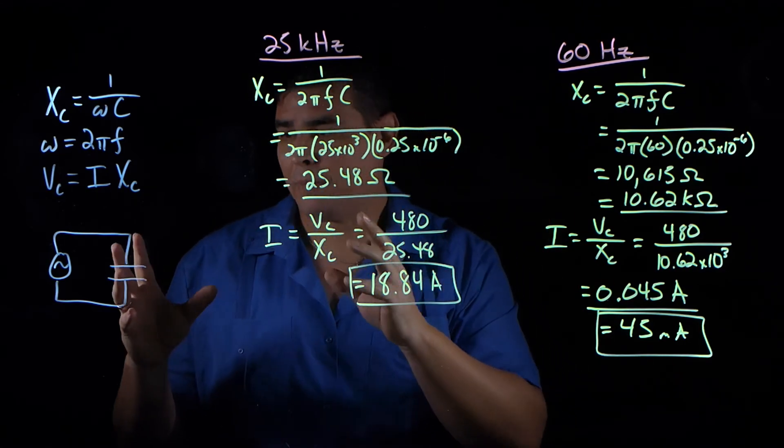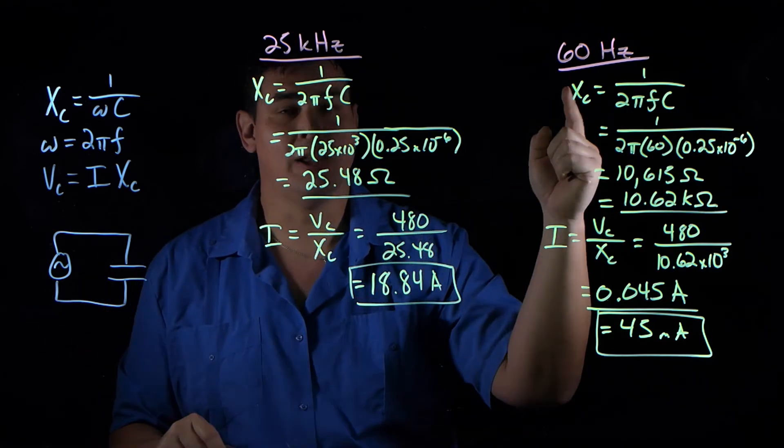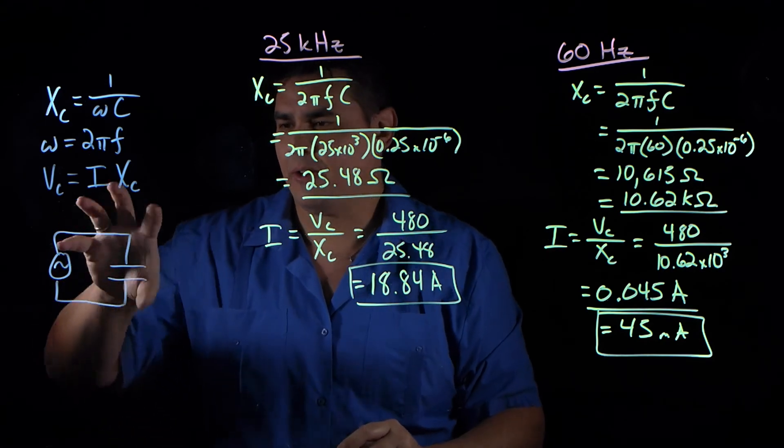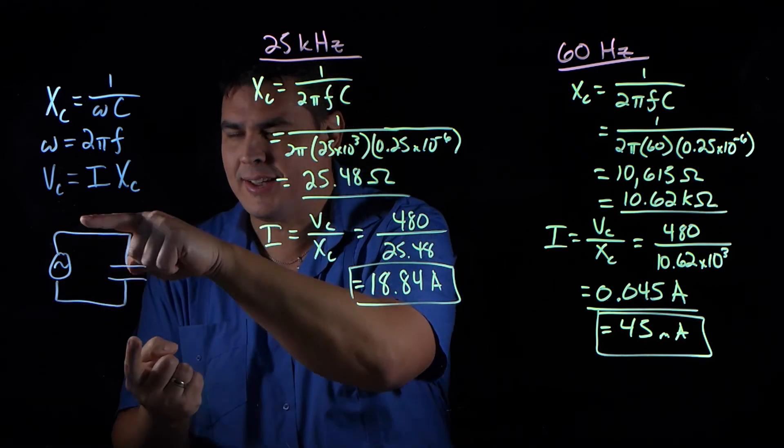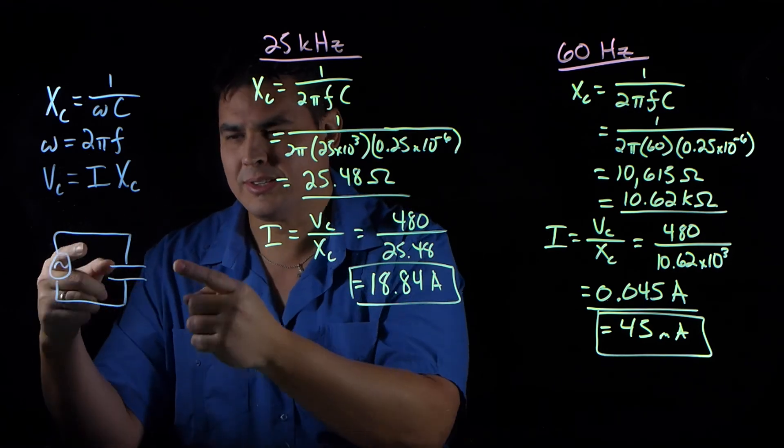So this should make sense if you remember how capacitors work in AC circuits. So at a low frequency, this AC source is pushing those electrons back and forth, but it's not going very fast. So it has time to fill up this capacitor and so it slows down the current and it acts kind of like a resistance.